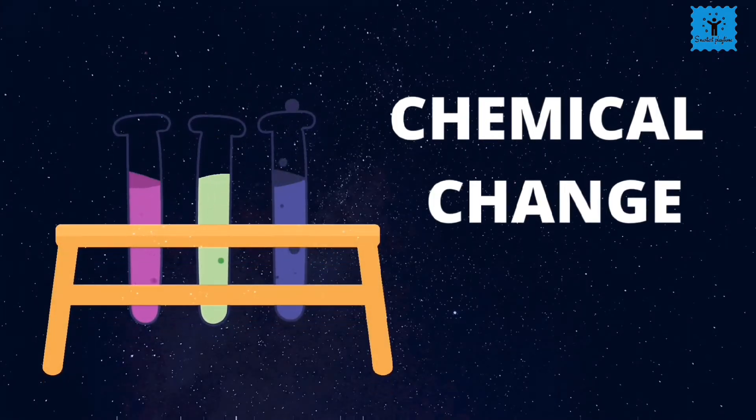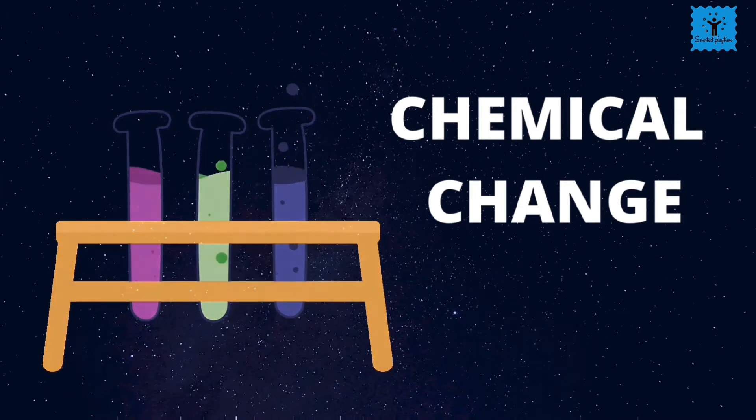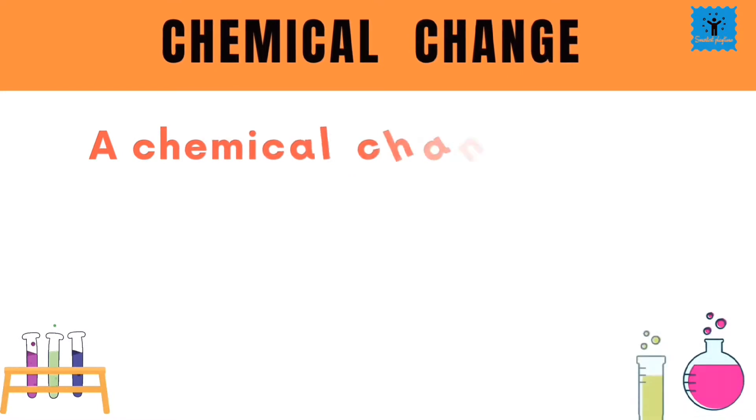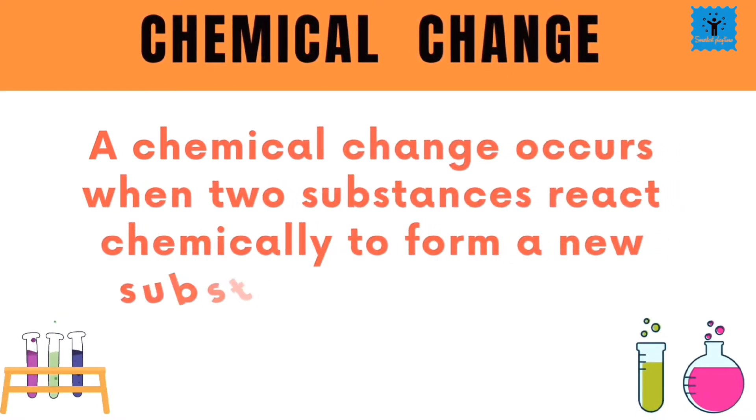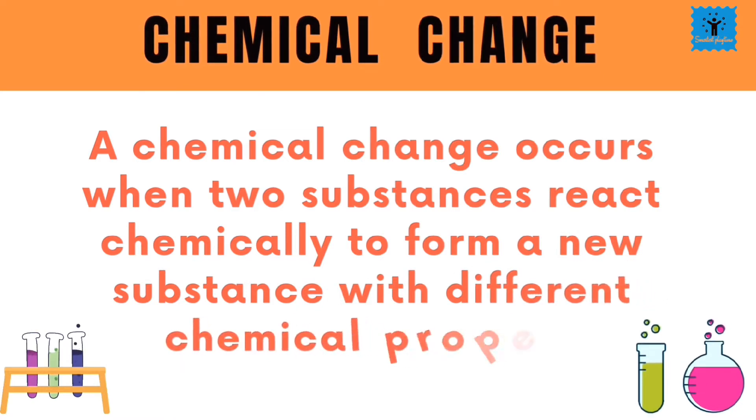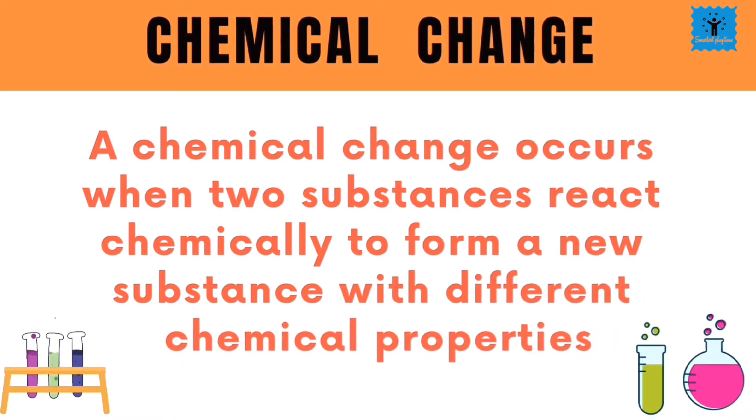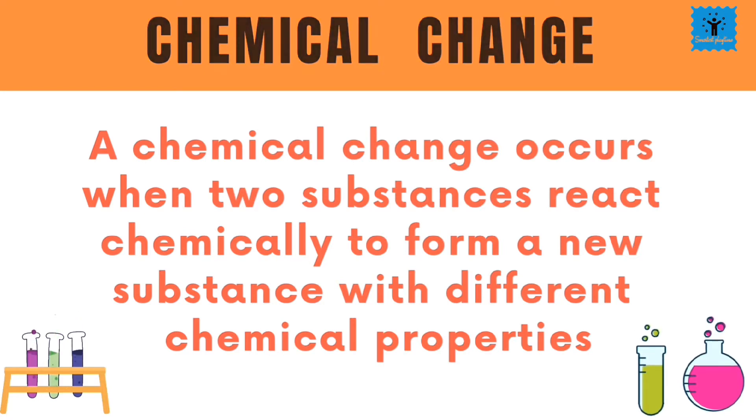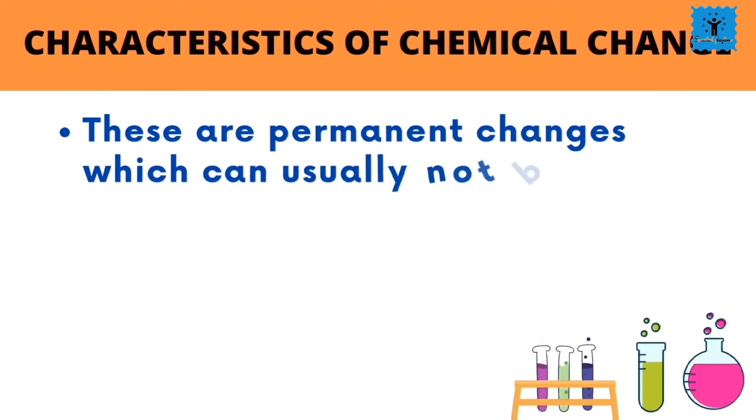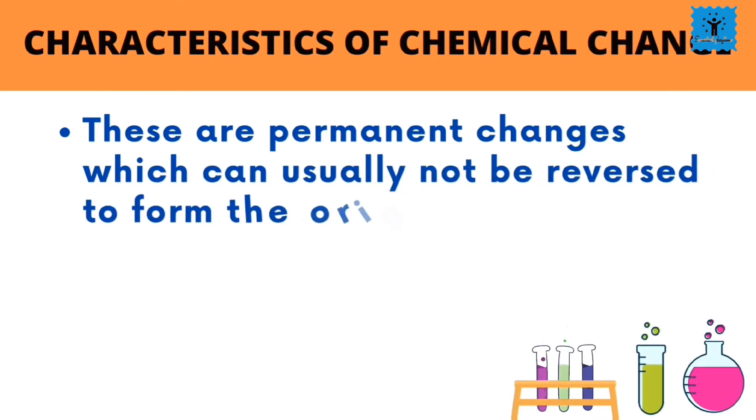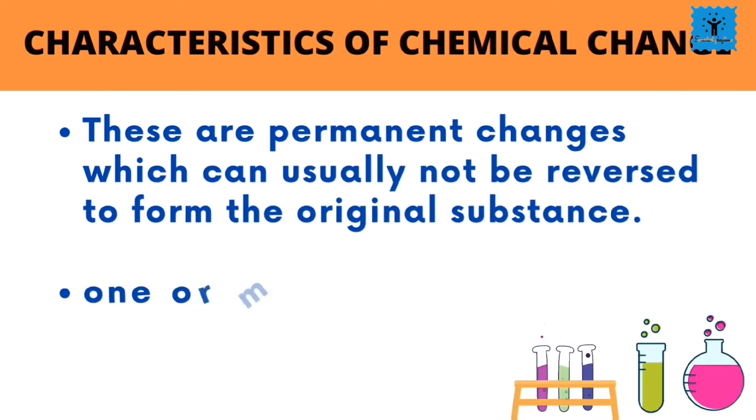The second category is called the chemical change. A chemical change occurs when two or more substances react chemically and form a new substance. Chemical changes are also called chemical reactions. Chemical changes are permanent changes. These cannot be reversed to form the original substance back.